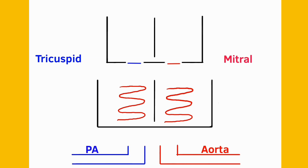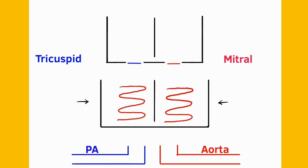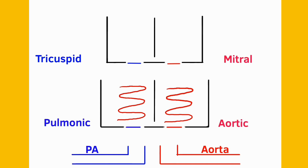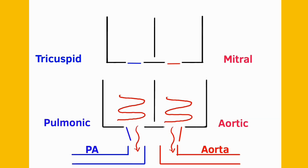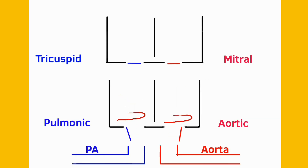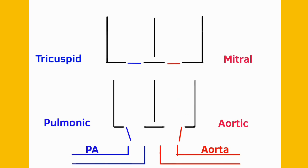Right after filling, the ventricles start contracting, but since all the valves are closed, blood is not leaving the ventricles, which means the volume inside is not changing. This phase of ventricular contraction is called isovolumetric contraction. The ventricles keep contracting until they develop enough pressure inside to force open the pulmonic and aortic valves, which then allows the ventricles to push blood out into the pulmonary artery and the aorta.